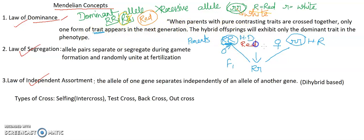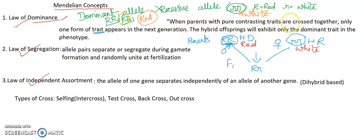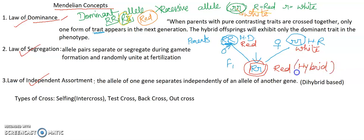So in this case, suppose yahan pe red liya aur yahan pe white liya — iska phenotype red, genotype capital R capital R; aur white ka genotype small r small r, phenotype white. When parents with the pure contrasting traits are crossed together, only one form of trait appears in the next generation — yahan pe ek hi color ka trait aaya hai, red hi aayega, kyunki law of dominance kehta hai ki jo dominant hai wahi express karega aur recessive ko express nahi hone dega. The hybrid offspring will exhibit only the dominant trait. Pure means homozygous characters. When we talk about hybrid, the hybrid offspring means heterozygous — it will express the dominant trait.